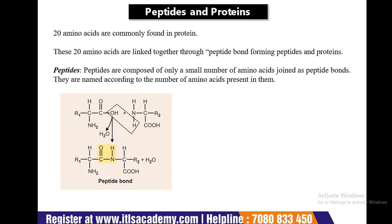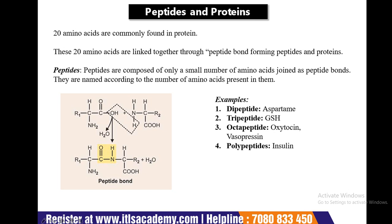Regarding peptides and proteins: the 20 amino acids commonly found in proteins are linked through peptide bonds, forming peptides and proteins. Peptides are composed of a small number of amino acids and are named according to the number of amino acids present. Two amino acids undergo dehydration with release of a water molecule, resulting in the formation of the peptide bond (C-O-N-H). Examples include the dipeptide aspartame (an artificial sweetener), glutathione (a tripeptide), vasopressin and oxytocin (octapeptides), and insulin (a polypeptide).